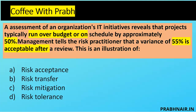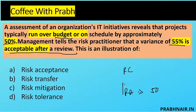Next coffee shot: an assessment of an organization's IT initiatives reveals that projects typically run over budget by approximately 50%. Management tells the practitioner that a variance of 55% is also acceptable after review. This means the appetite level is 50% and the tolerance level is increased to 55%. The question is not about how you respond, but what this illustration represents. It is not acceptance, transfer, or mitigation.